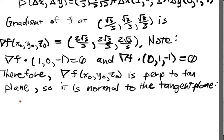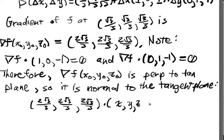And so we have the normal equations, (2√3/3, 2√3/3, 2√3/3) dotted with (x, y, z) minus the point (√3/3, √3/3, √3/3) is equal to 0. That's the normal equation of the tangent plane.